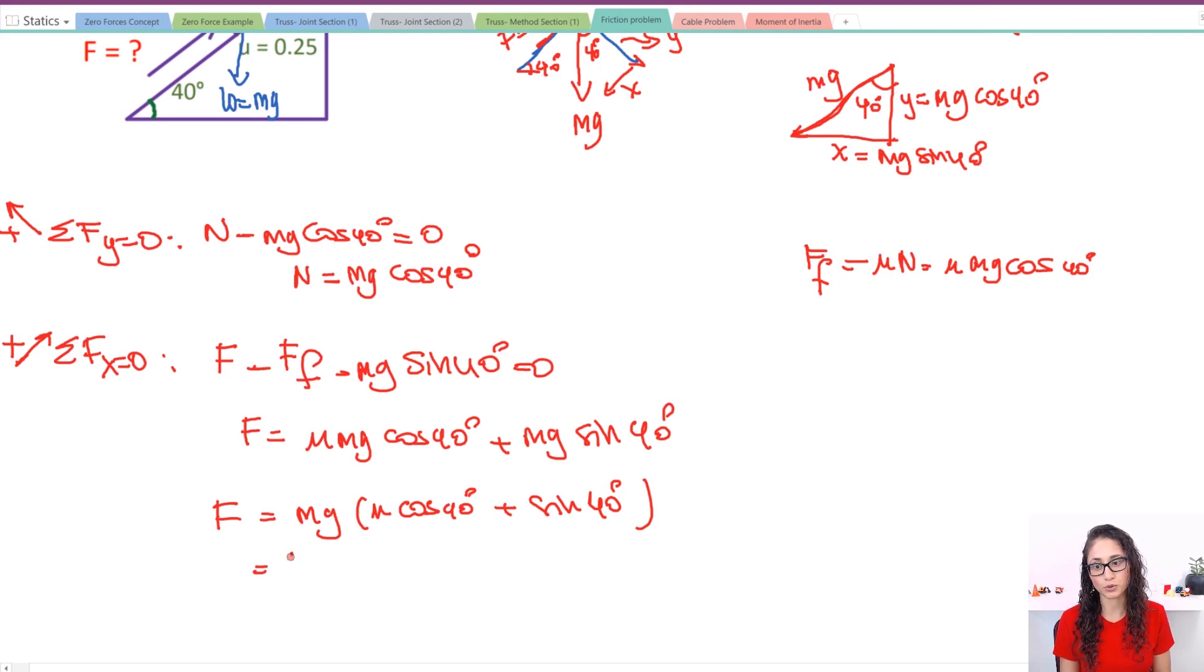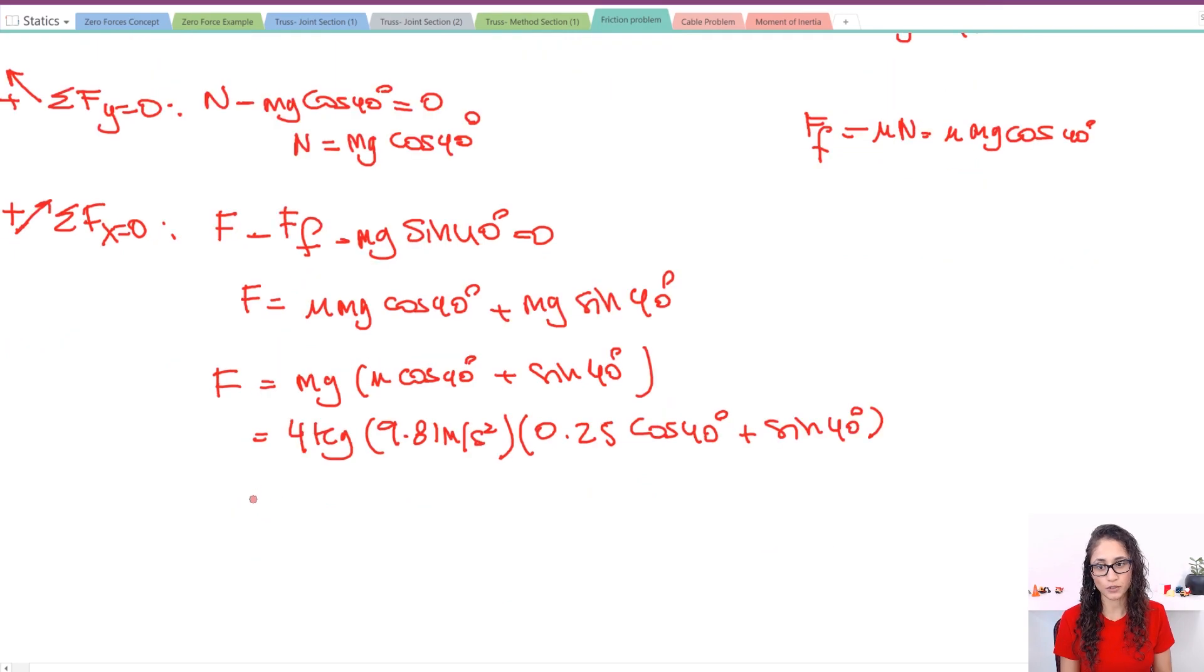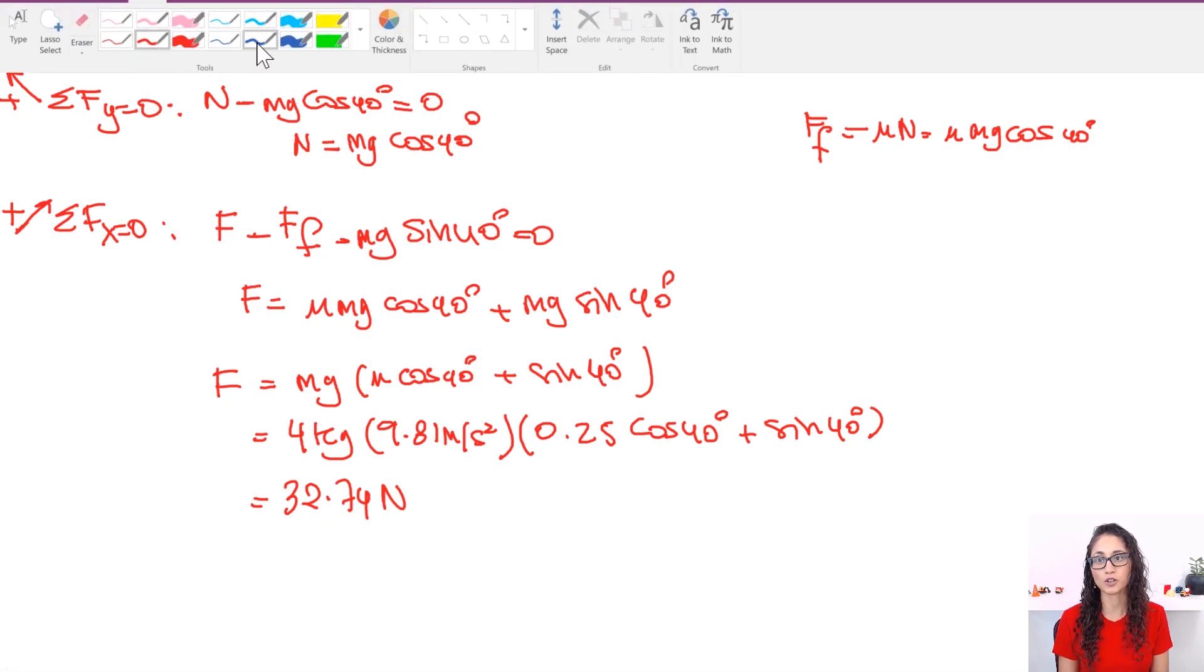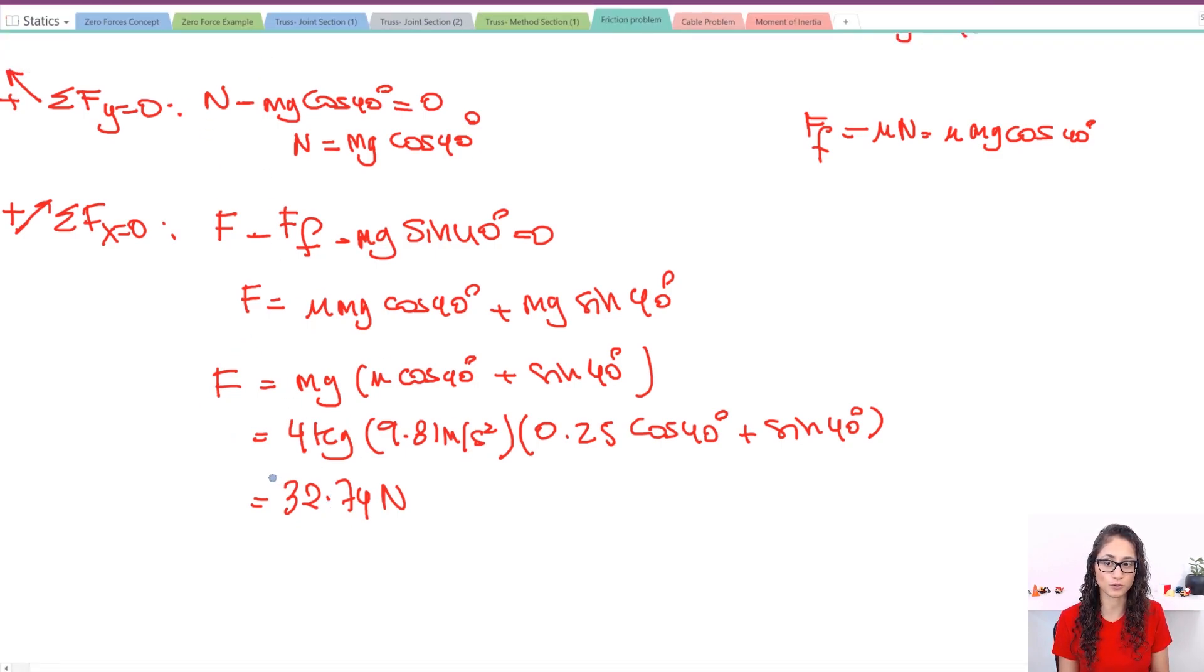And now you can just plug in everything. So I have m is equal to 4 kilograms. G is equal to 9.81 meters per second squared. Mu was 0.25. Then I have cosine 40 plus sine 40. So if you plug in this you will get 32.74 newtons. So it has to be newtons because here you have kilograms times meters per second squared and that's the unit for newtons. Which is good because that's also the unit for force.